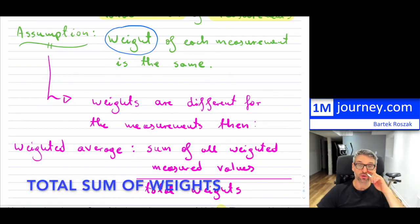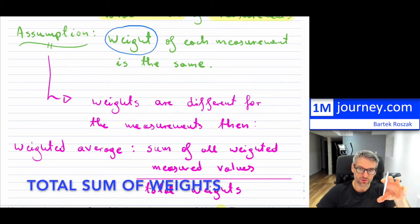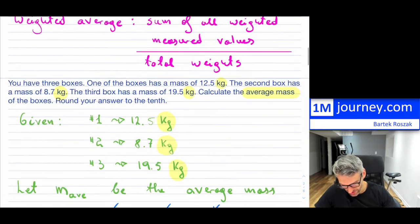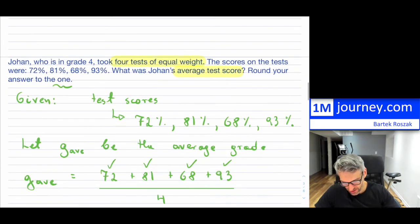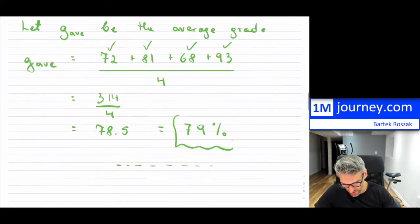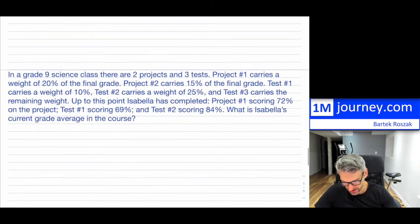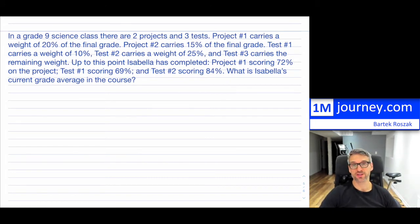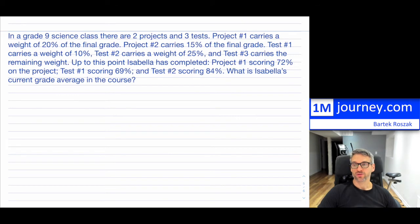A weighted average still means we want one number to approximate all measurements, but we do it differently — we don't just add things up and divide by the total number of measurements, because now they don't carry the same weight. The definition is: the sum of all weighted measured values divided by the total weights. That is the difference. Let's see this in action with another example involving test scores.